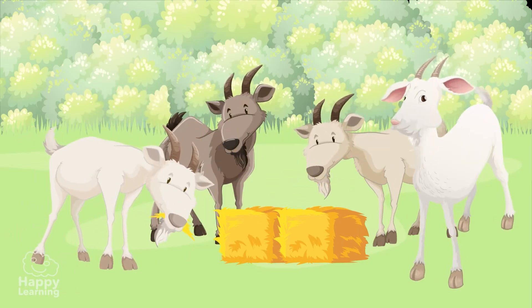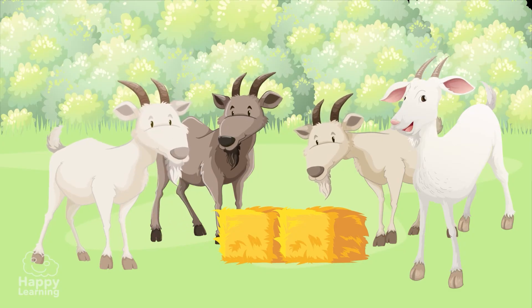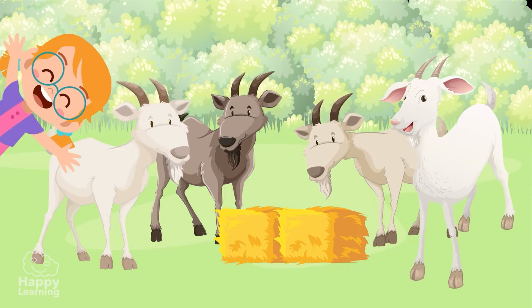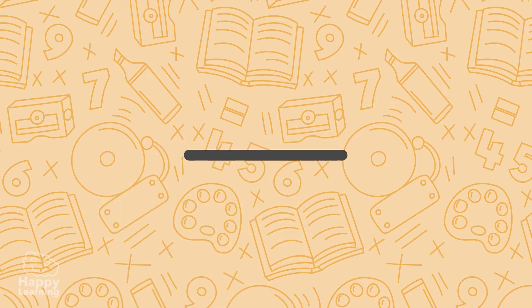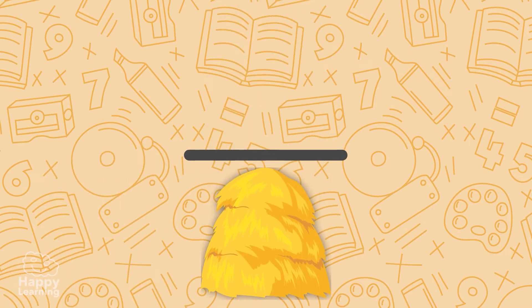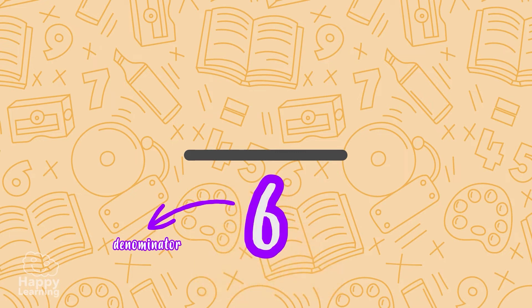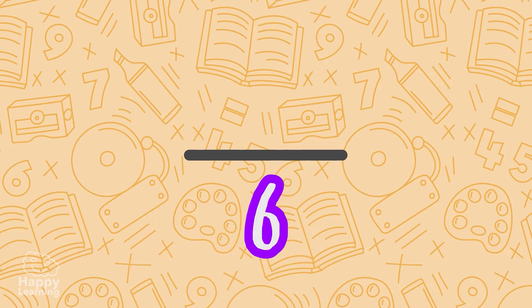Wait, don't eat it yet! It looks like the goats have eaten four pieces. Let's express it in fractions. The first thing we have to do is see how many parts the whole number — in this case the pile of straw — has been divided into. We put that number at the bottom, in the denominator. In our case it is six, because we divided the straw into six equal pieces.